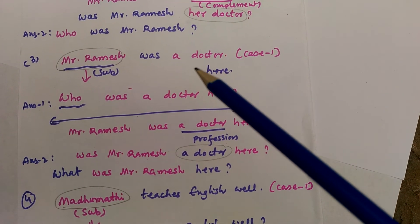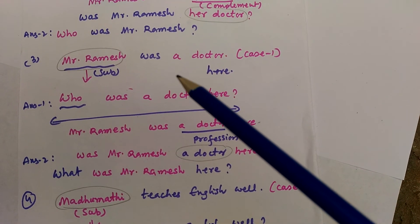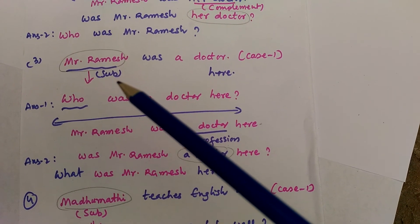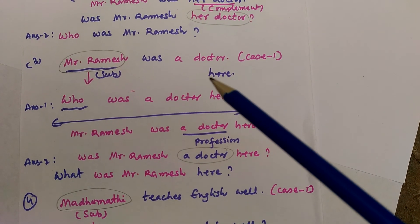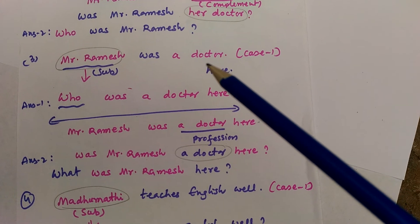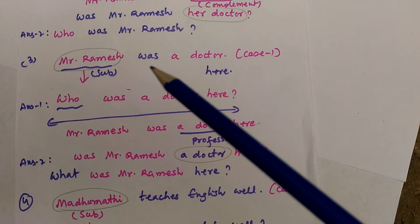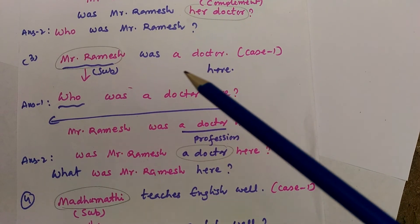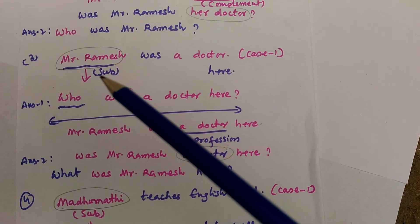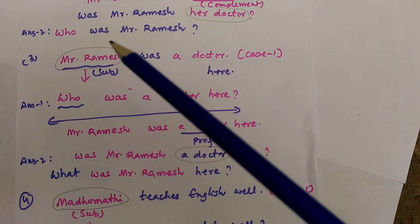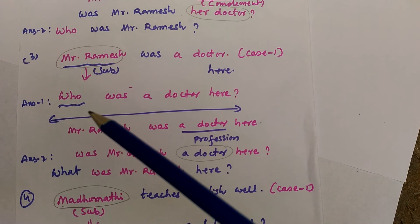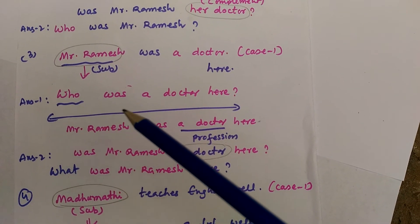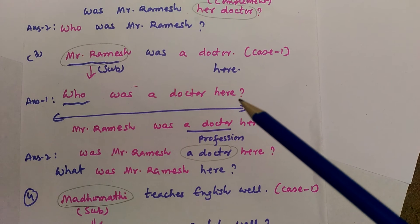This is the exercise. Number one: 'Ramya can sing songs.' This is case one — the person is found in the subject place. So Ramya is removed from the subject place and 'who' is written there. The required answer is: 'Who can sing songs?'